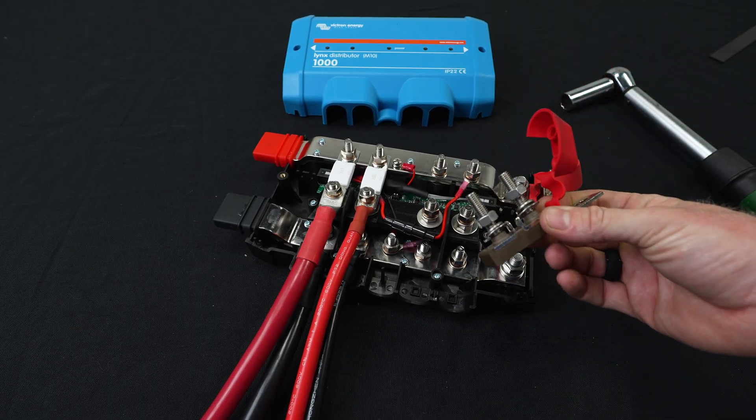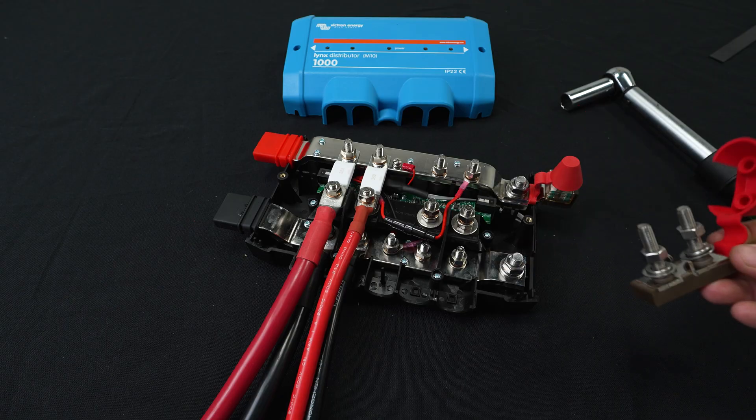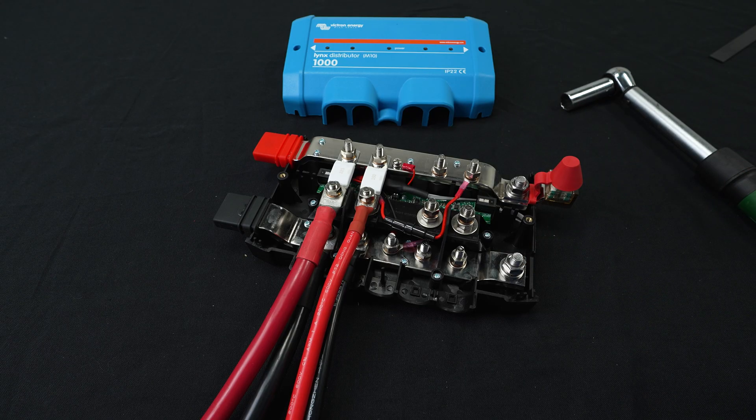So that's the way you can add one connection. Again, if you want to use two fused connections, use the dual post MRBF holder. Both of those are on our website.